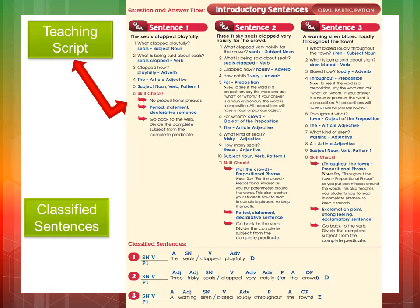The teacher's manual contains the question and answer flows completely scripted for every sentence that students will classify during the year. At the bottom of the page, the sentences will appear labeled and classified. The question and answer flow must always remain consistent throughout the grade levels.